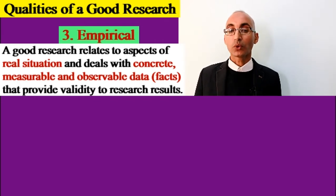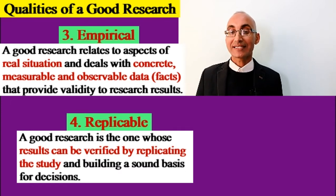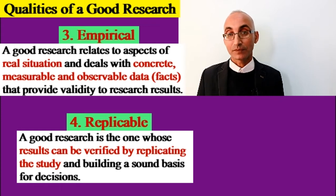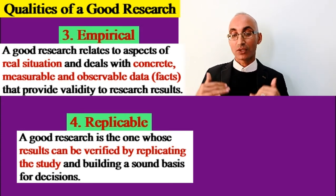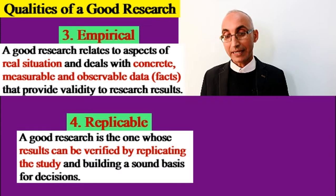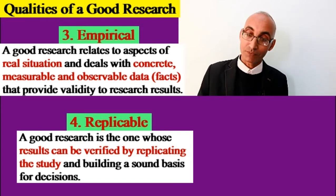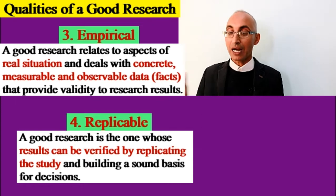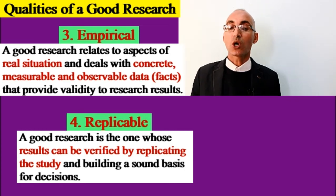Fourth, good research is replicable. This means when research results can be verified by replicating — copying the study — and building a sound basis for decisions. It means you investigate the same phenomenon using other methodologies and find similar results. Here the research is good, credible, and you can depend on it to conduct further research on other phenomena or problems.